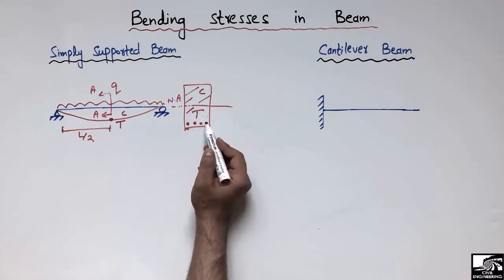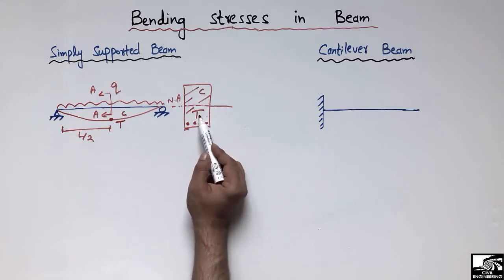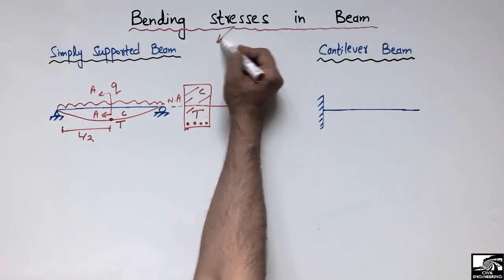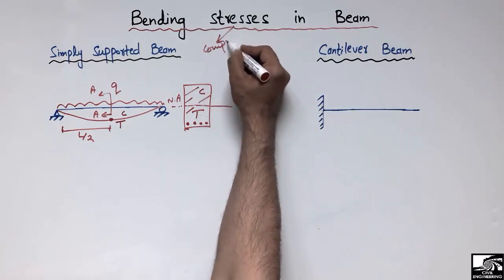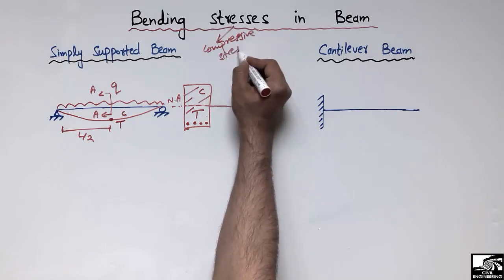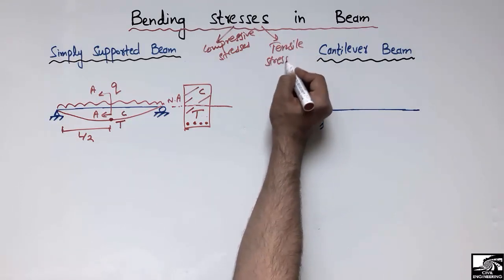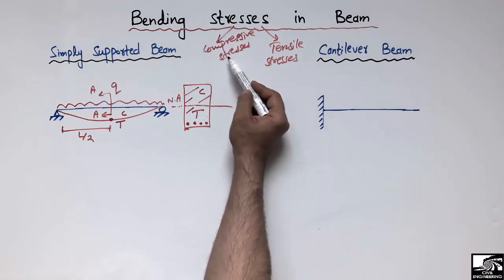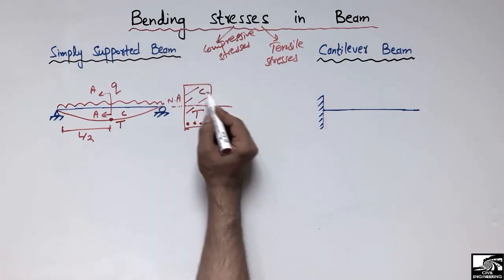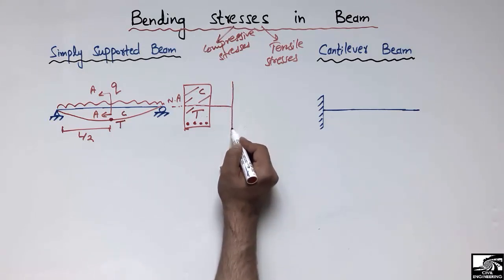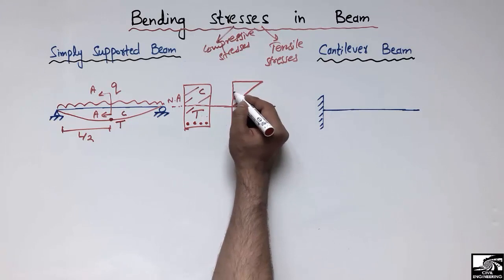We now have two types of stresses in the beam section: compressive stresses at the top and tensile stresses at the bottom. In bending, we always have two different types of stresses — one portion is compressed while the other is in tension. Looking at the beam cross-section, the upper portion is compressed and the lower portion is in tension.